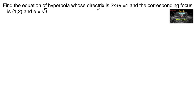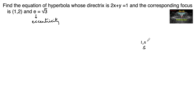Find the equation of a hyperbola whose directrix is 2x plus y equals 1, and the corresponding focus is (1, 2), and eccentricity e is equal to root 3. So the given fixed point focus is (1, 2), and the fixed line directrix is 2x plus y equals 1. Let us consider a point P.